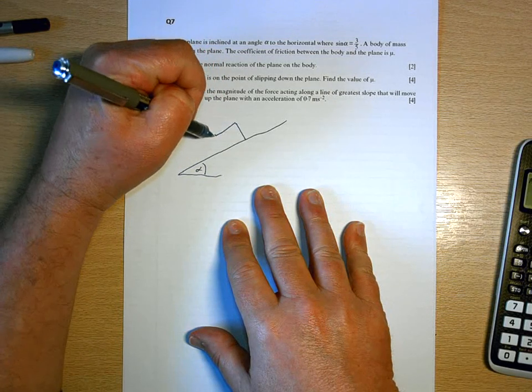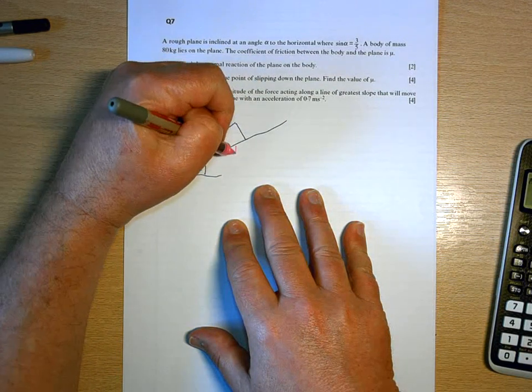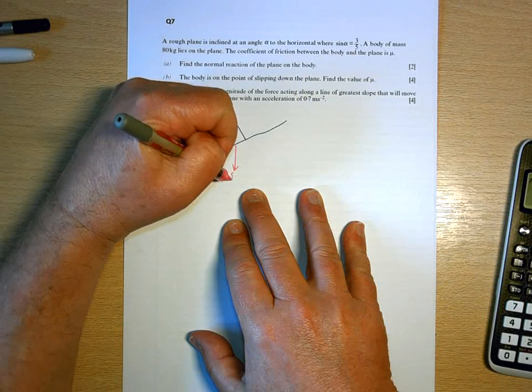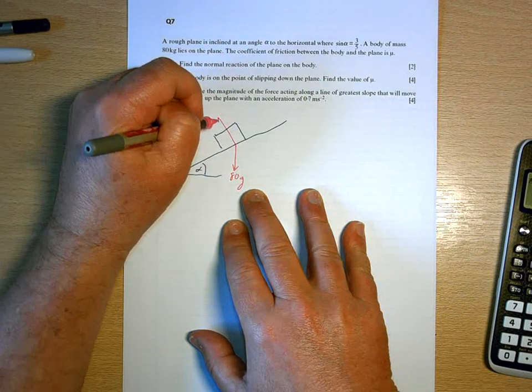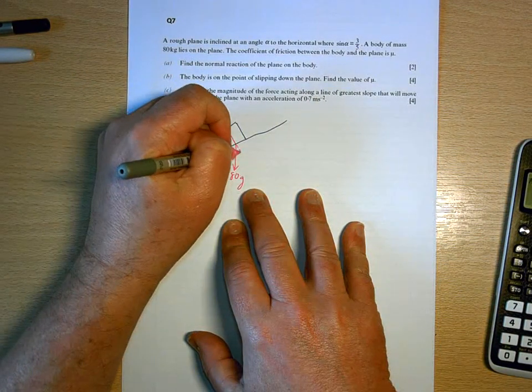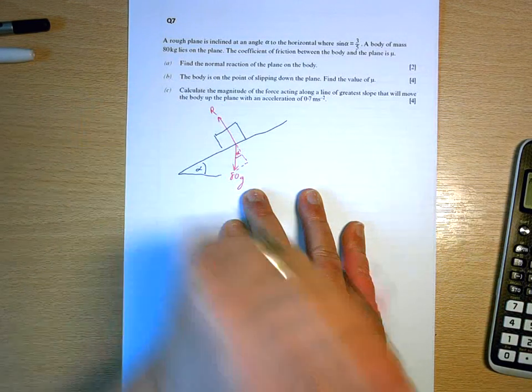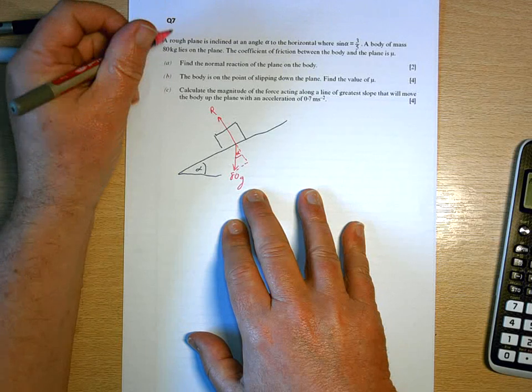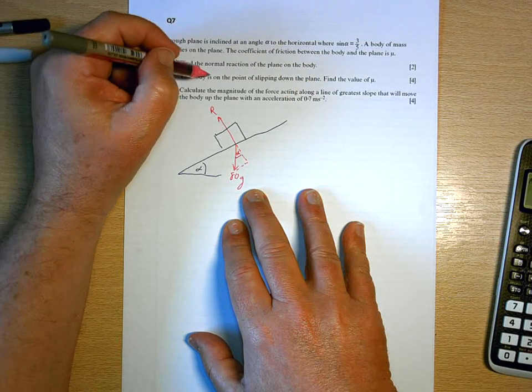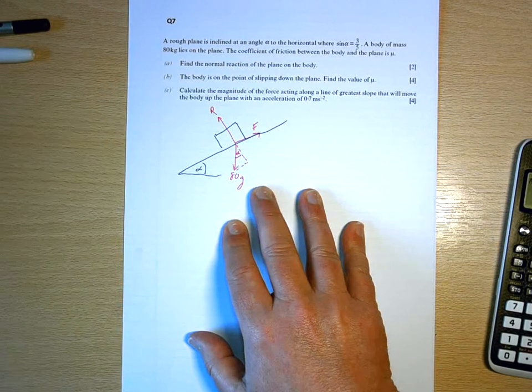Let's set that up. First of all, there's alpha, there's my body. That's going to have a mass of 80, so its weight is 80g. The normal reaction is perpendicular to the plane, which then creates that angle there. The body's on the point of slipping down the plane, so we'll have friction acting to prevent that.